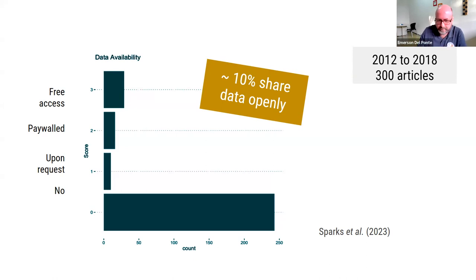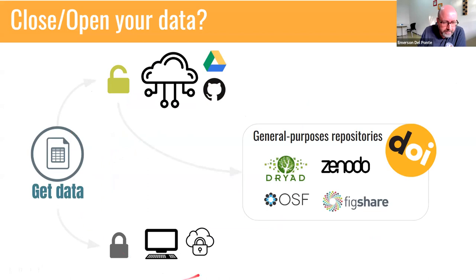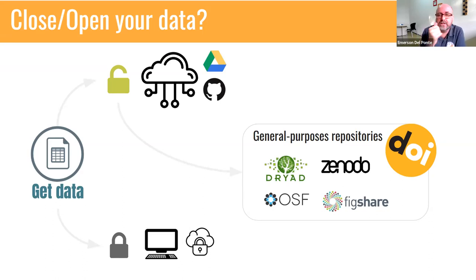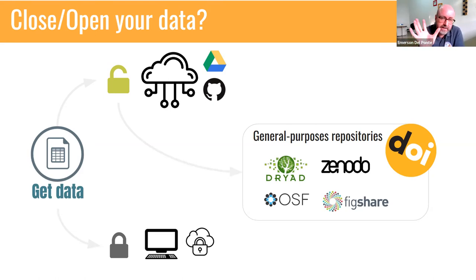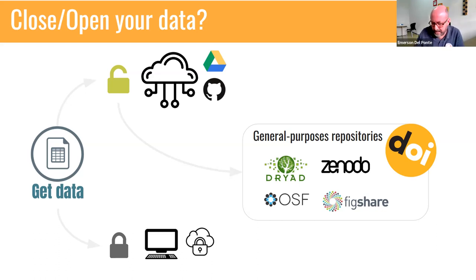We can either keep the data privately closed or open. We need some general-purpose repositories for data — there are many, and they are free. You can get a DOI, a digital object identifier, so we have a citable link. People can find your data and cite it if they use it. Some repositories are specific depending on the data you have; some are general purpose. If you have experimental data, you can use Zenodo, Open Science Framework, Figshare, Dryad, and other different repositories to store your data and get a DOI.